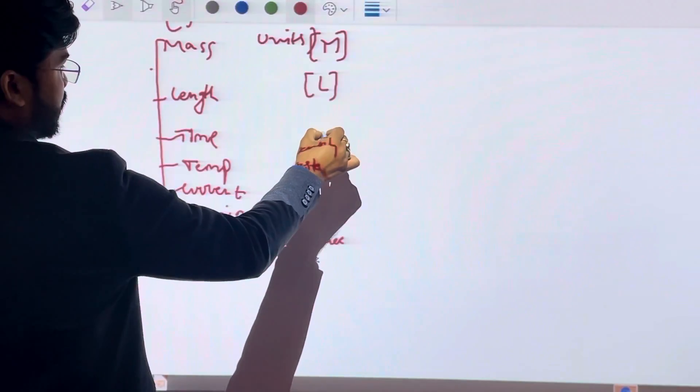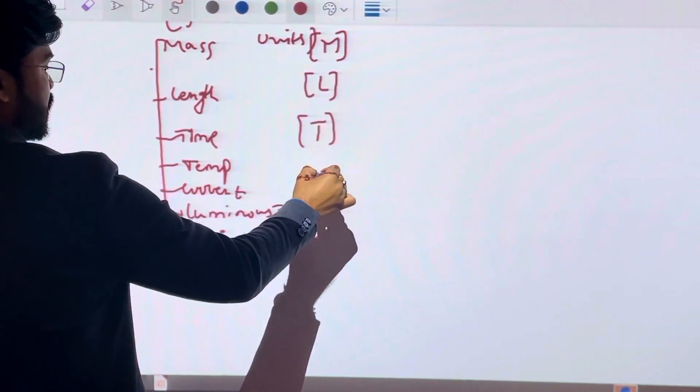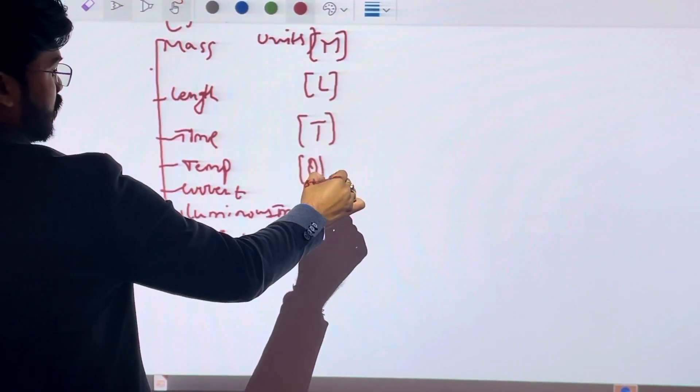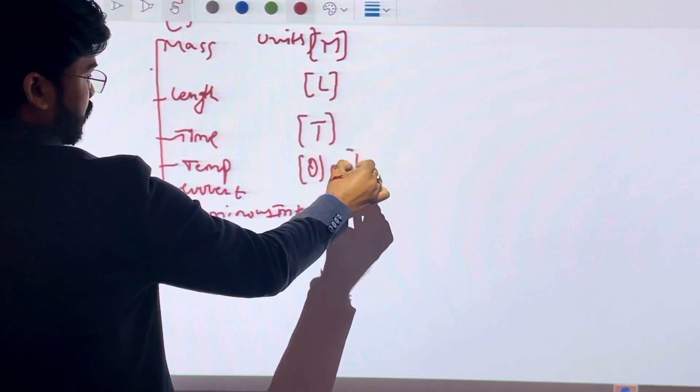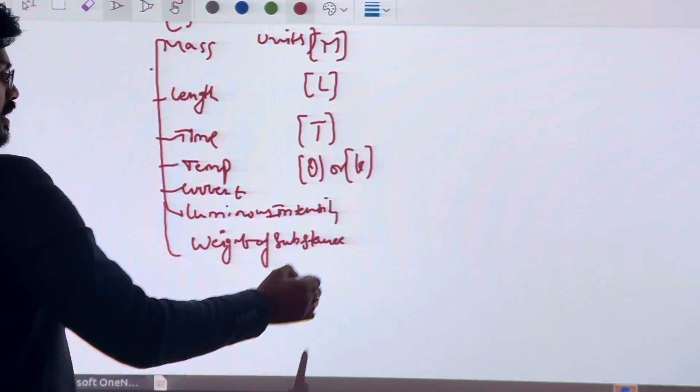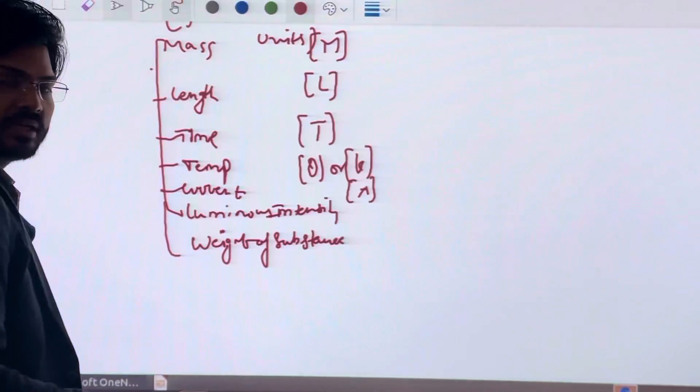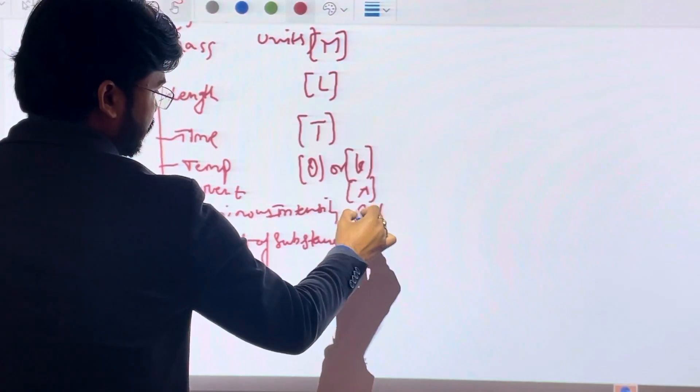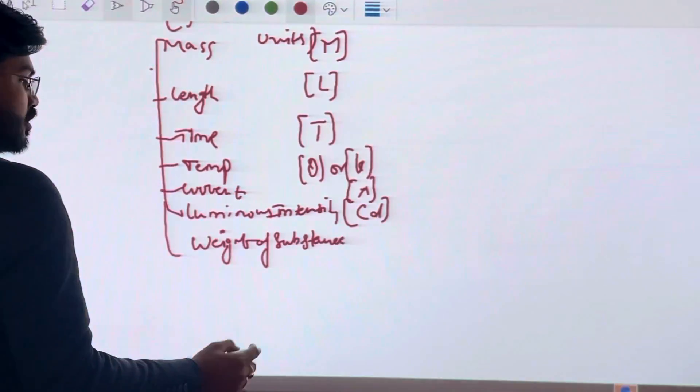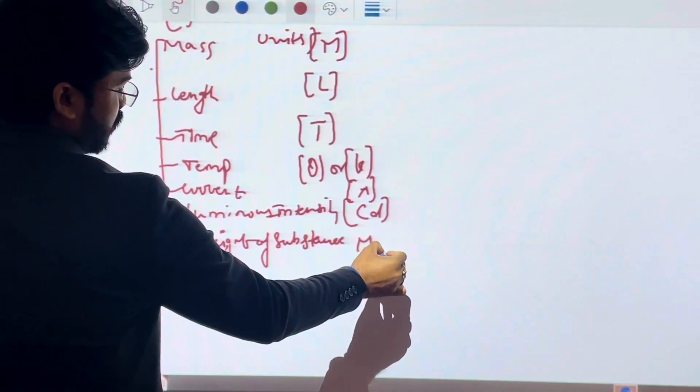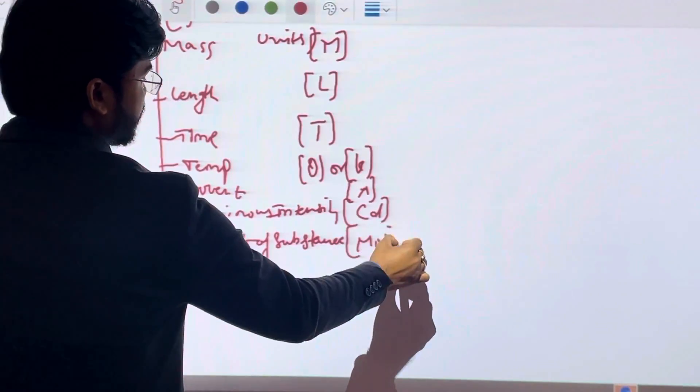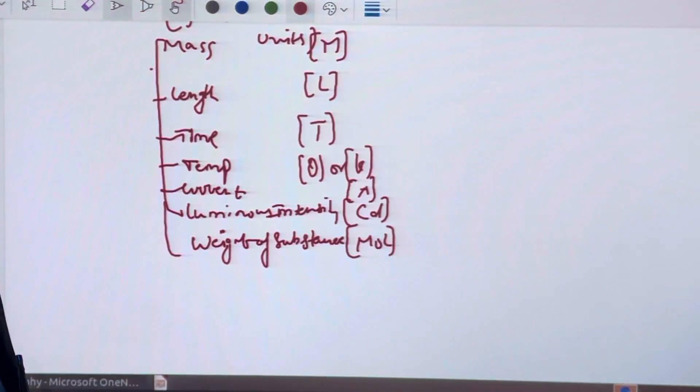Time T, temperature theta or Kelvin, current ampere, luminous intensity candela CD, and the weight of substance is mole. These are the seven basic fundamental quantities.